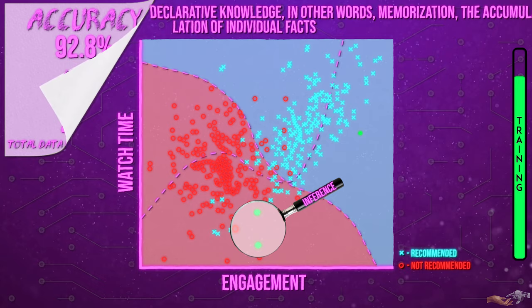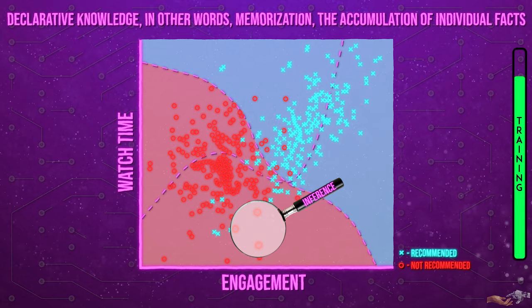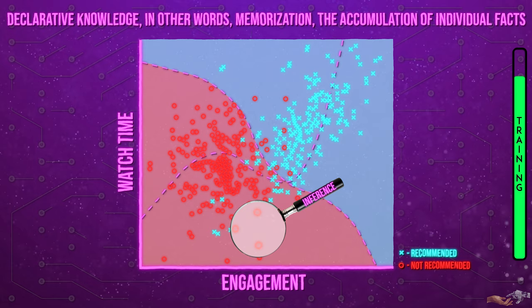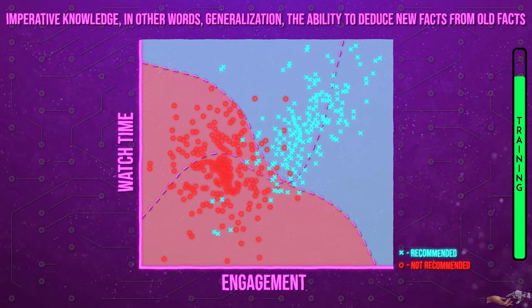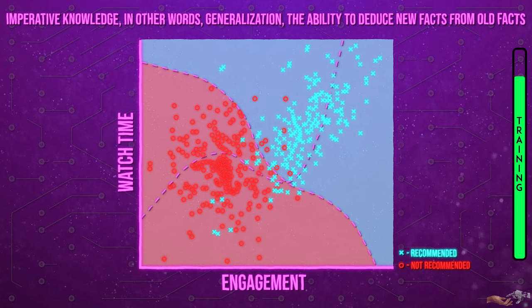This is the ability to predict the outputs whether that be a value or a category of new data. Machine learning inference draws parallels to the second primary type of knowledge we exhibit, imperative knowledge, in other words generalization, the ability to deduce new facts from old facts. Additionally, as the model encounters new data it can use it to train further refining its decision boundaries to become better at inferring future data.